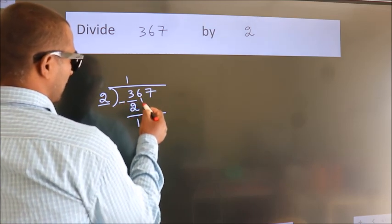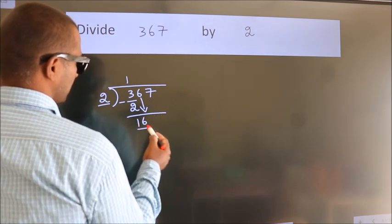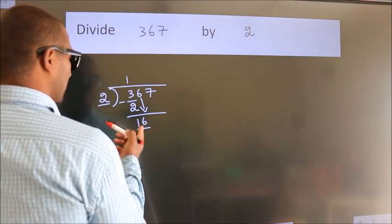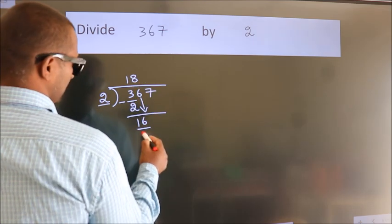After this bring down the beside number. So 6 down. So 16. When do we get 16? In 2 table, 2 8s, 16.